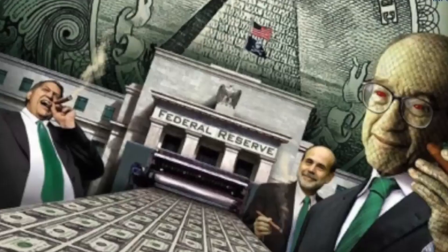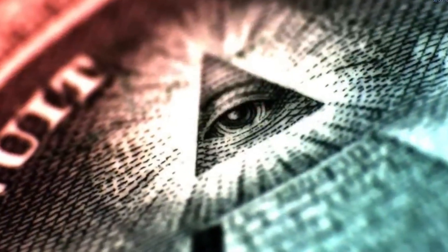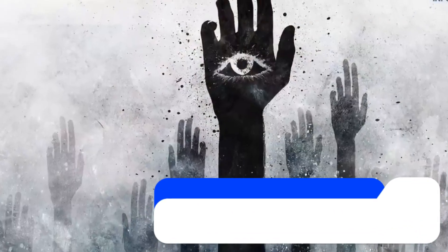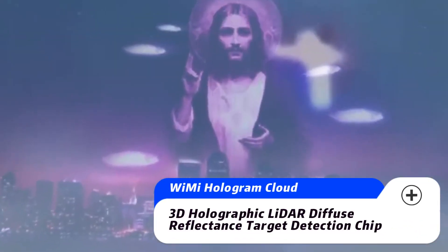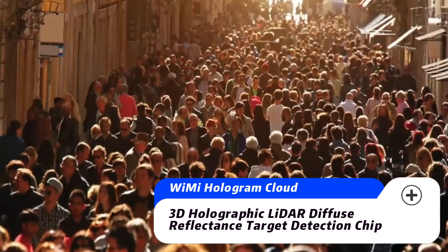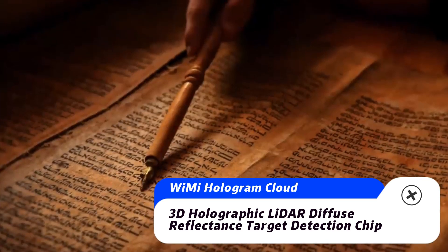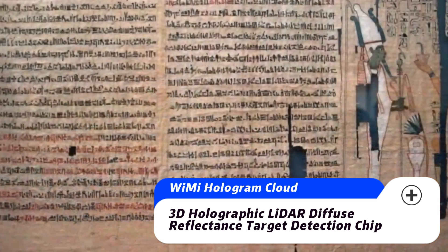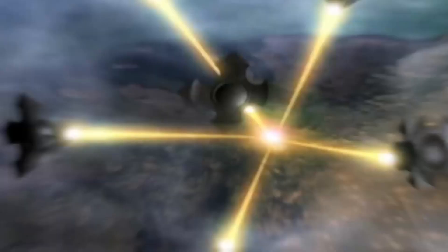Traditional LiDAR has already been popularized in the primary stage of autonomous driving. For example, adaptive cruise control systems in cars, which used to be configured only in high-end vehicles, have now become standard equipment in most cars. 3D holographic laser LiDAR technology can provide accurate feedback of spatial position and relative distance information to detect various objects and image them with spatial 3D holographic point cloud data.